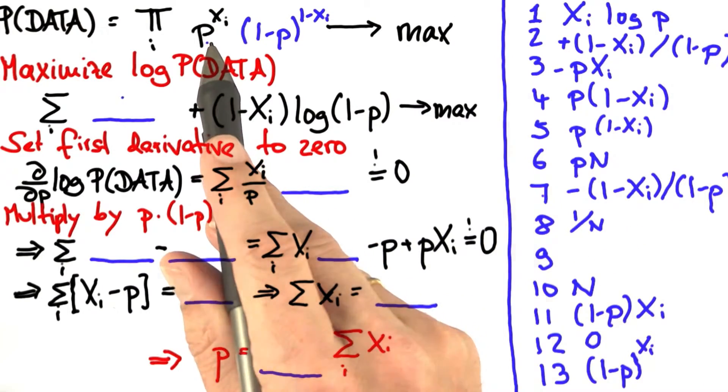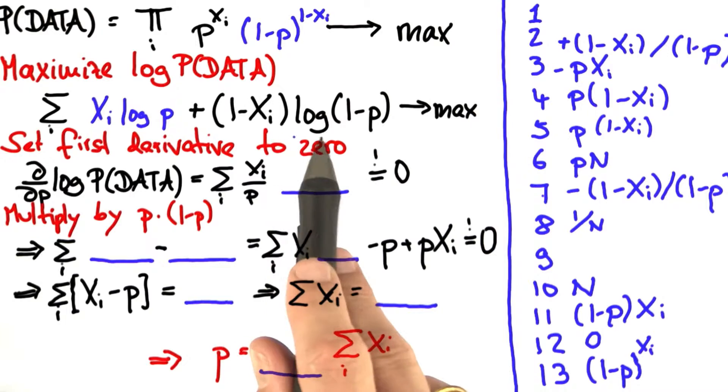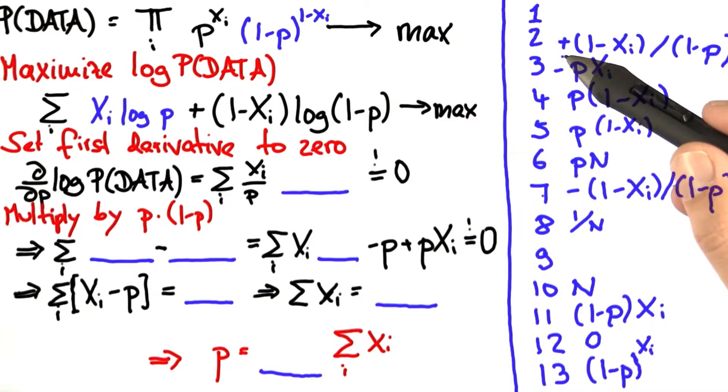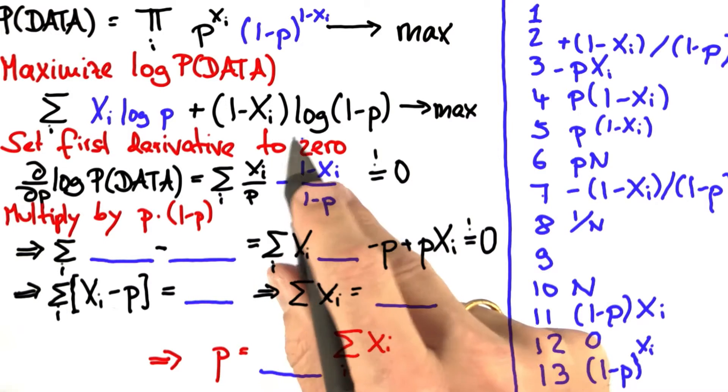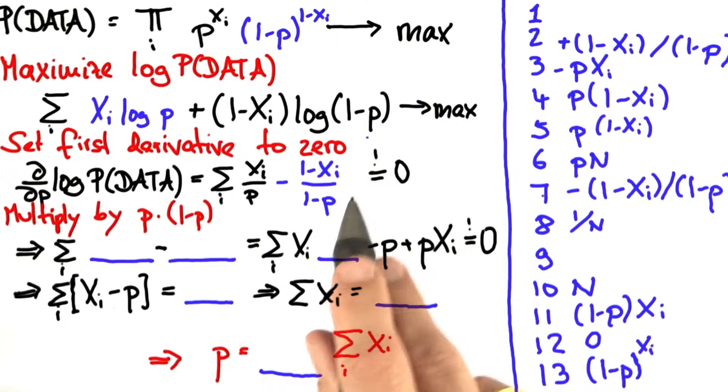The logarithm of this guy over here is number 1, xi log p. The first derivative of this expression over here is number 7. And that's interesting. It's not number 2. There's a minus sign over here, and the minus sign is inherited from the minus sign inside the logarithm using the chain rule of differentiation.